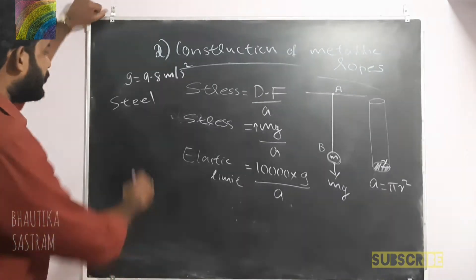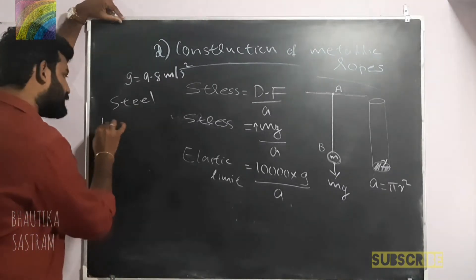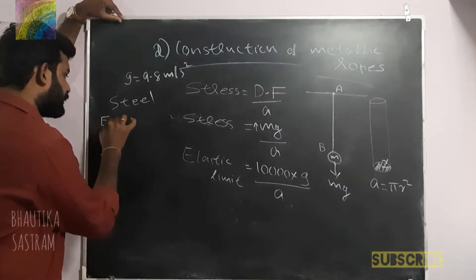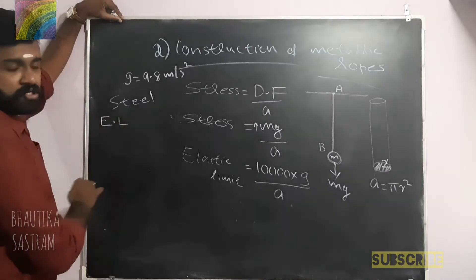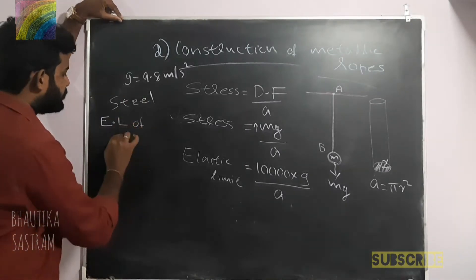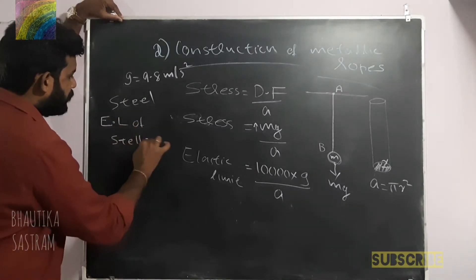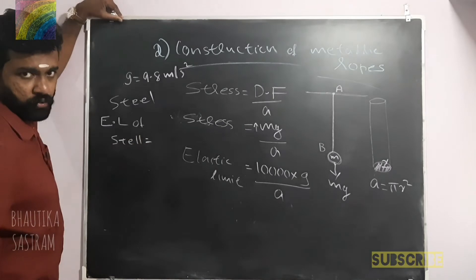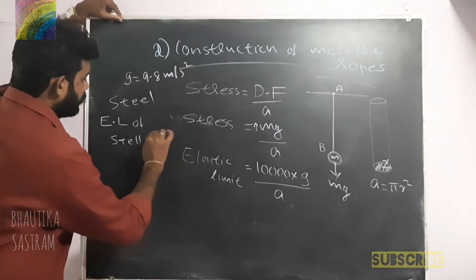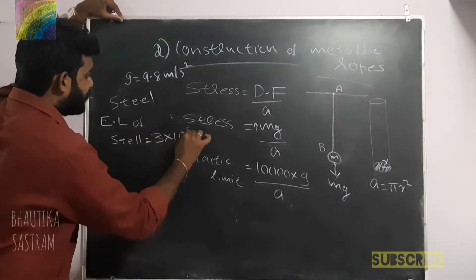So the elastic limit is equal to 10,000 into g divided by A. The elastic limit of steel is equal to 3 into 10 raised to 8 Newton per meter squared.